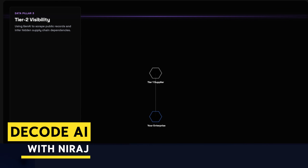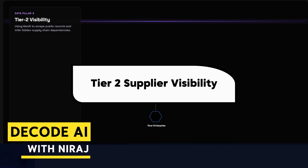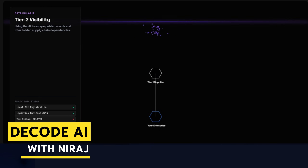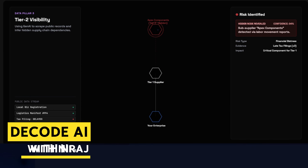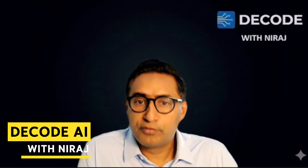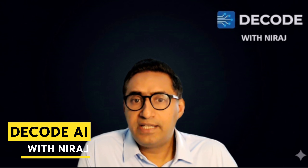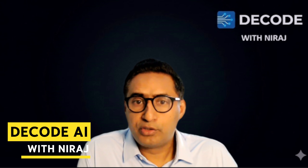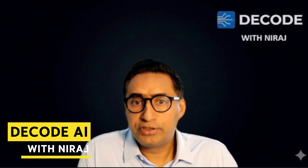Data Pillar Three: Tier Two Supplier Visibility. This is critical for resilience — you can't contractually manage a supplier's sub-tier remotely. But Gen AI can use public information, local business registrations, regulatory filings, labor movement reports, and social media sentiment to identify financial distress or material labor issues at crucial sub-suppliers. This provides the transparency needed to de-risk your extended value chain. This continuous synthesis of global events creates a live, real-time risk profile for every major component, raw material, and logistics lane you purchase.